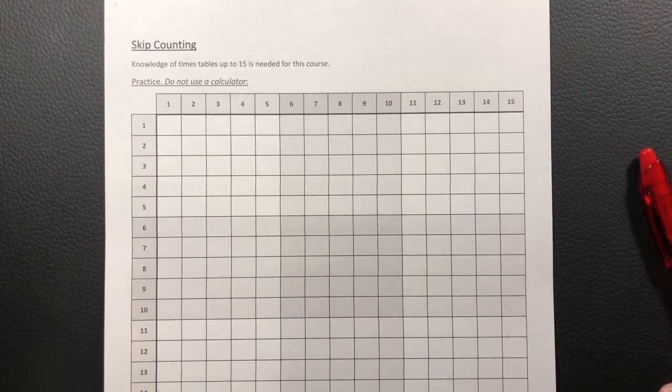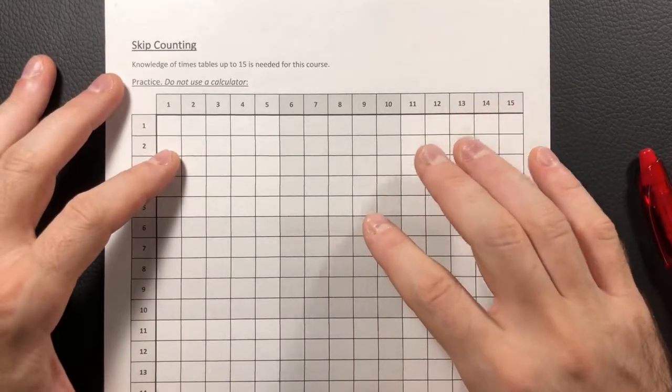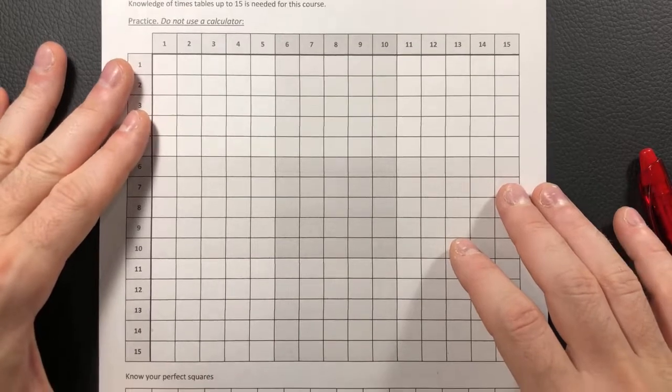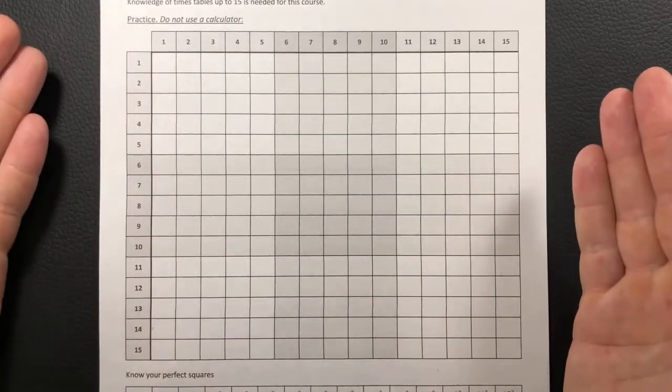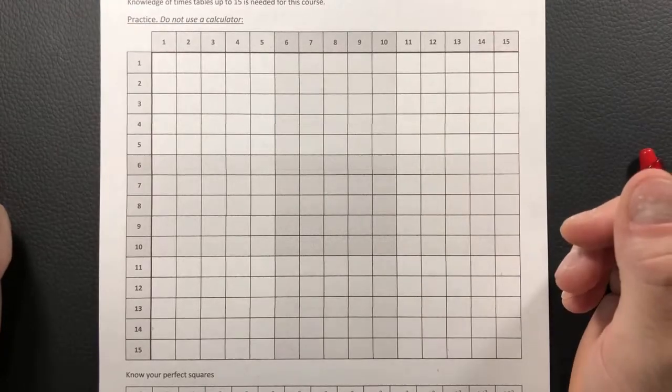Okay, so today we're going to be going through skip counting. Now skip counting today is mostly just going to be a timed exercise. So the idea is that in Algebra 1, throughout the series of videos that we're going to be doing here, we need to be able to know our times tables up to 15.